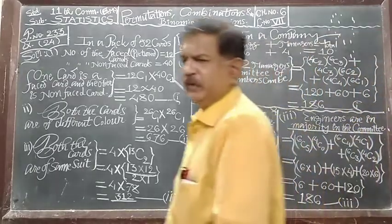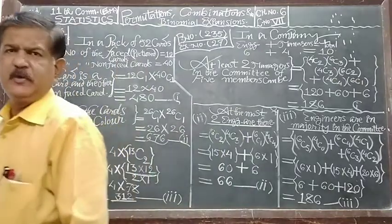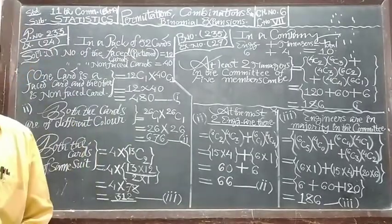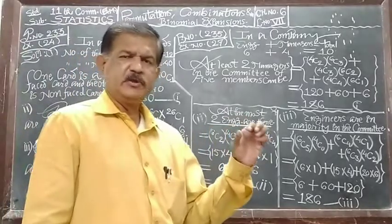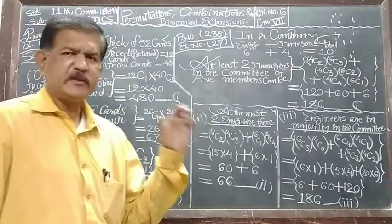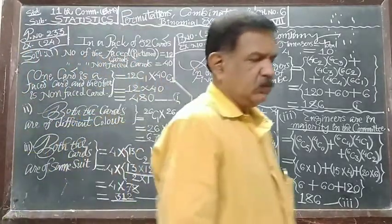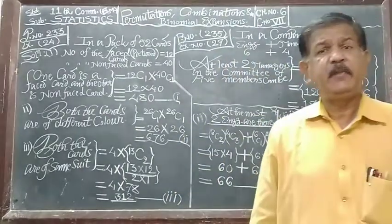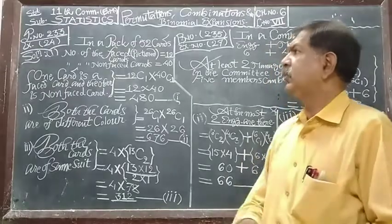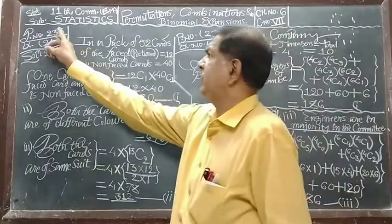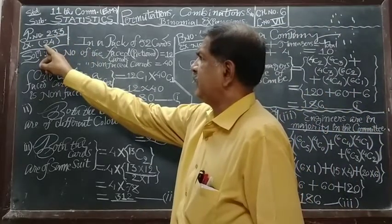Hello good morning everyone. Standard 11 commerce, subject statistics, in which we take chapter number six: permutations, combinations, and binomial expansions. We take practical examples based on permutation and combination in our textbook, page number 233, illustration example number 24.